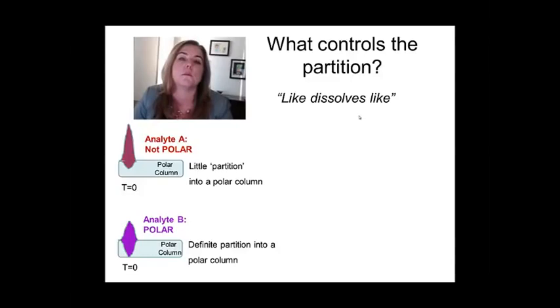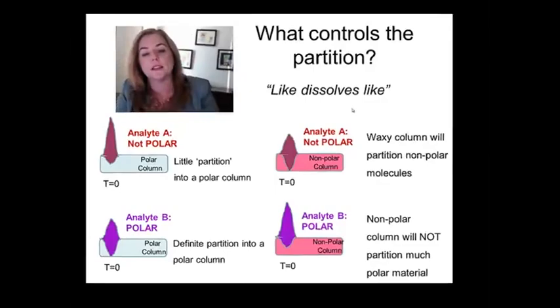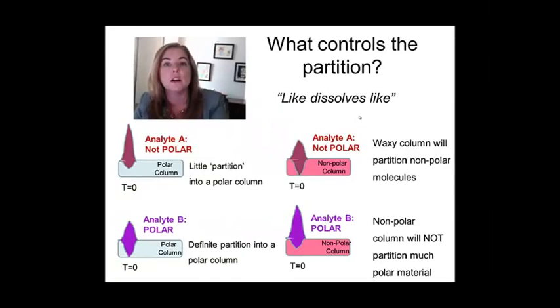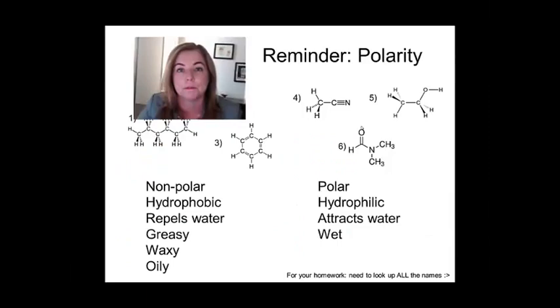So I want you to imagine, what if I flipped the column to being a nonpolar column? Well, then my oil is going to soak in. It's going to take forever. And my alcohol, let's say, isn't. And it's going to come out fast. So we would switch the orders in which we would observe the two different substances. One that came out early on a polar column will come out late on a nonpolar column.